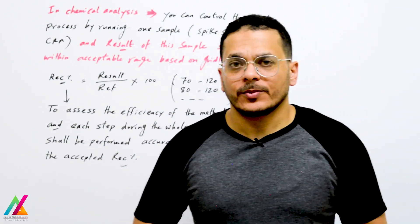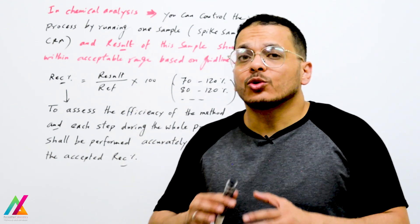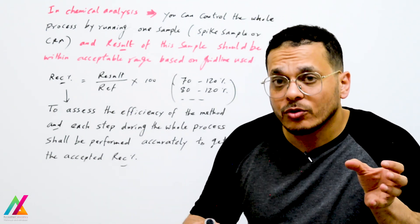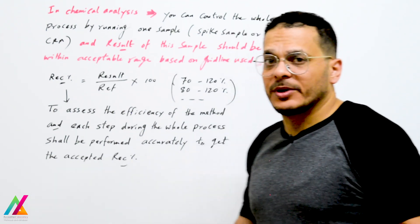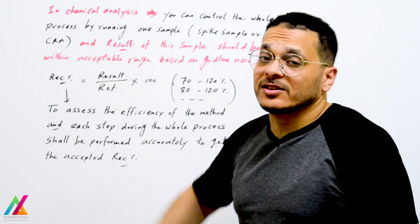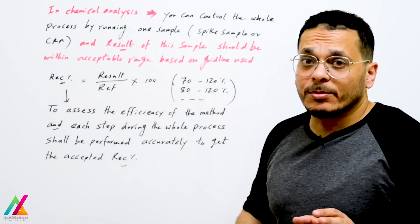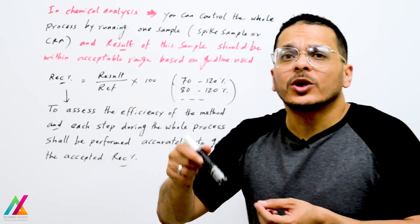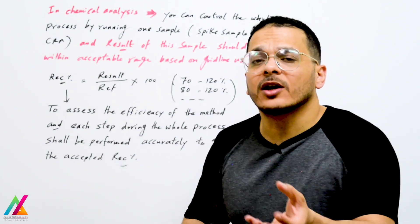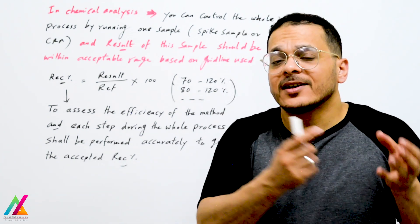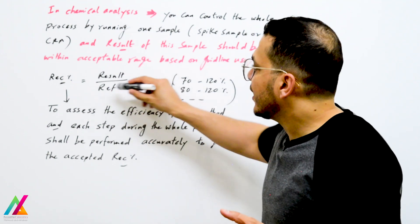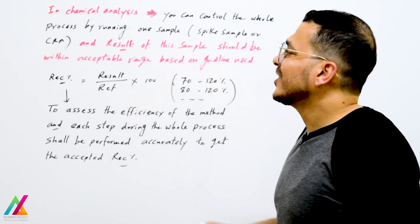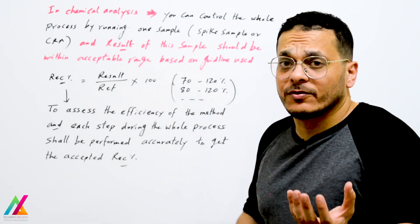In chemical analysis, you can control the whole measurement process and ensure accuracy by running only one spike sample or certified reference material. You spike a sample or blank sample with a known concentration of target analytes, then check the result. The result is divided by the reference value or known concentration and multiplied by 100 to get the recovery.